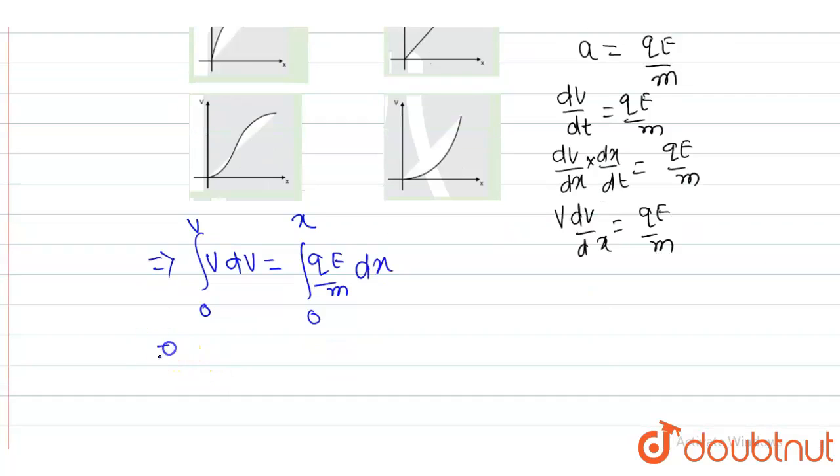Now we know integration of v comes out to be v²/2 from 0 to v. This is qE/m, which is constant with respect to x, comes out, and this is x from 0 to x.